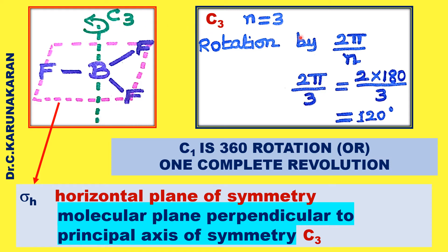What is C3? It is represented by Cn; therefore in this case n equals 3. Rotation by axis of symmetry is simply rotation by 2π/n; therefore 2π/3 equals 2×180/3 = 120 degrees. What is C4? C4 means n equals 4, rotation by 2π/4 equals 90 degrees. C4 axis of symmetry gives 90 degree rotation to a similar configuration.